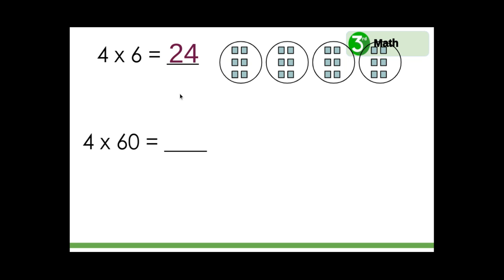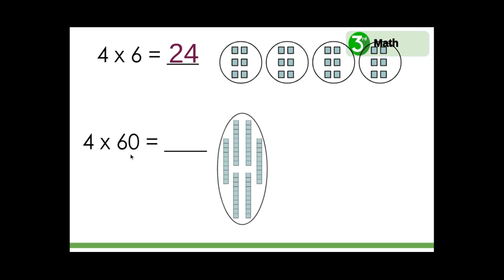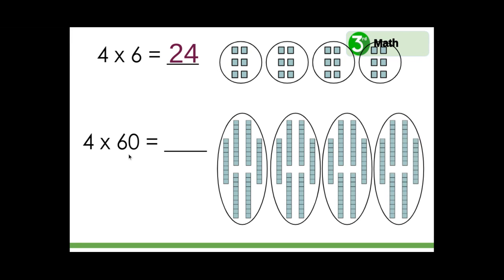Four times sixty: instead of multiplying six ones, we're multiplying six tens — sixty, sixty, sixty, sixty, sixty, sixty — four times. Four times six ones equals twenty-four ones; four times six tens equals twenty-four tens. So we can write two hundred forty, because this zero in the ones place holds the place to show tens — twenty-four tens.